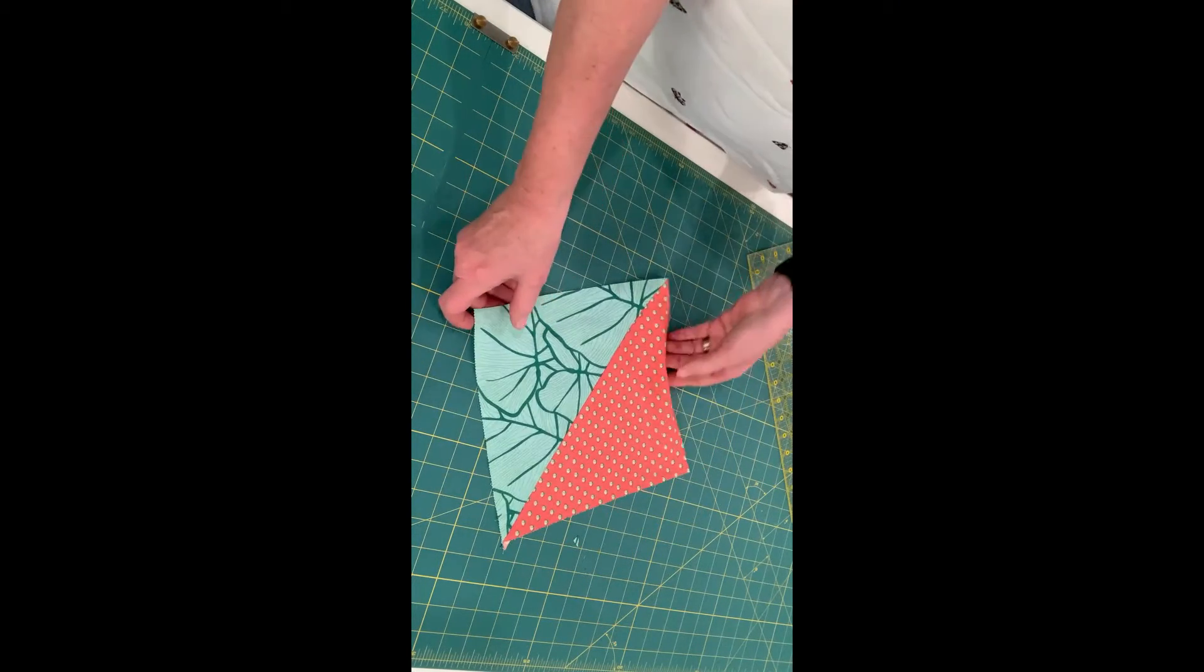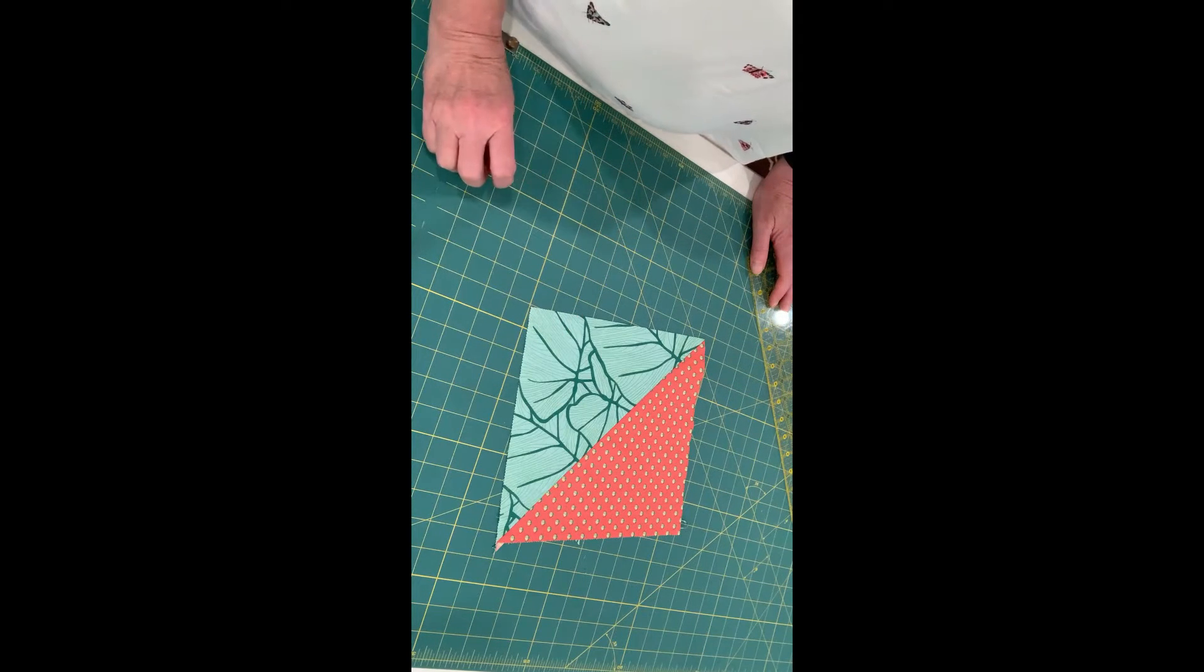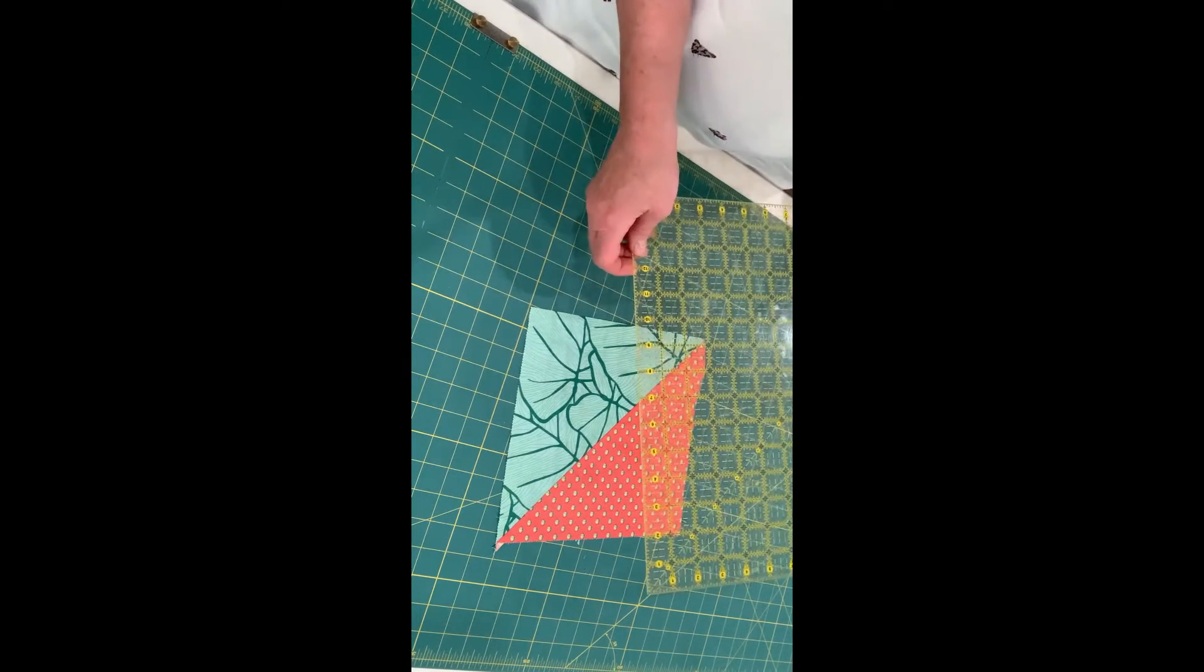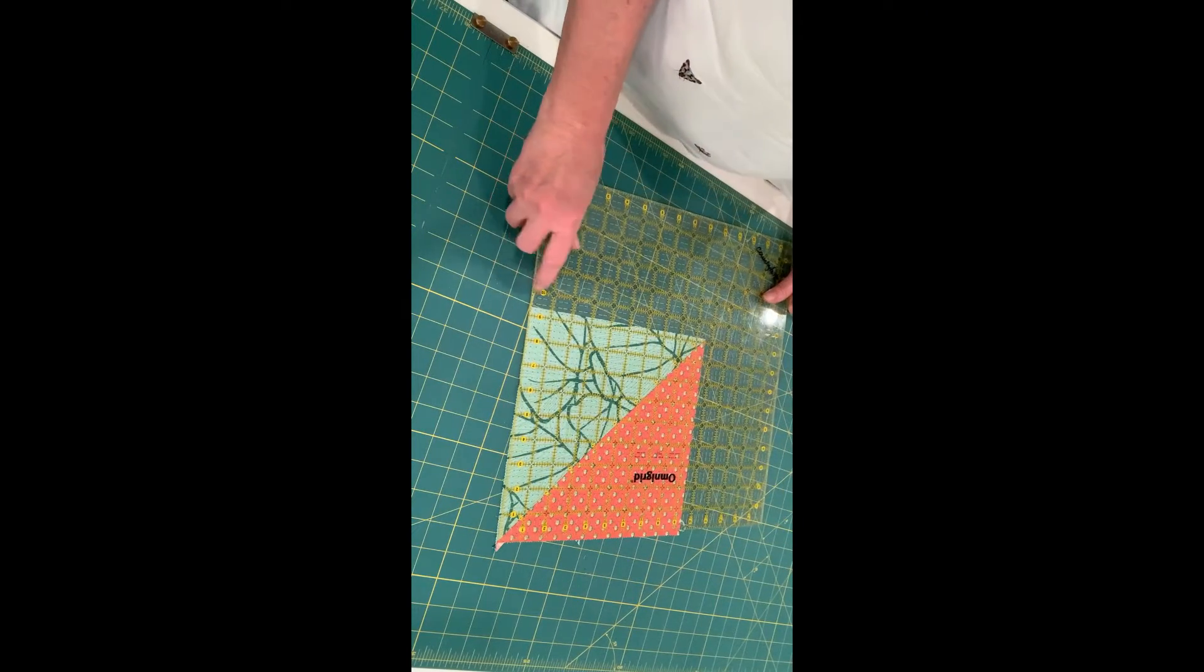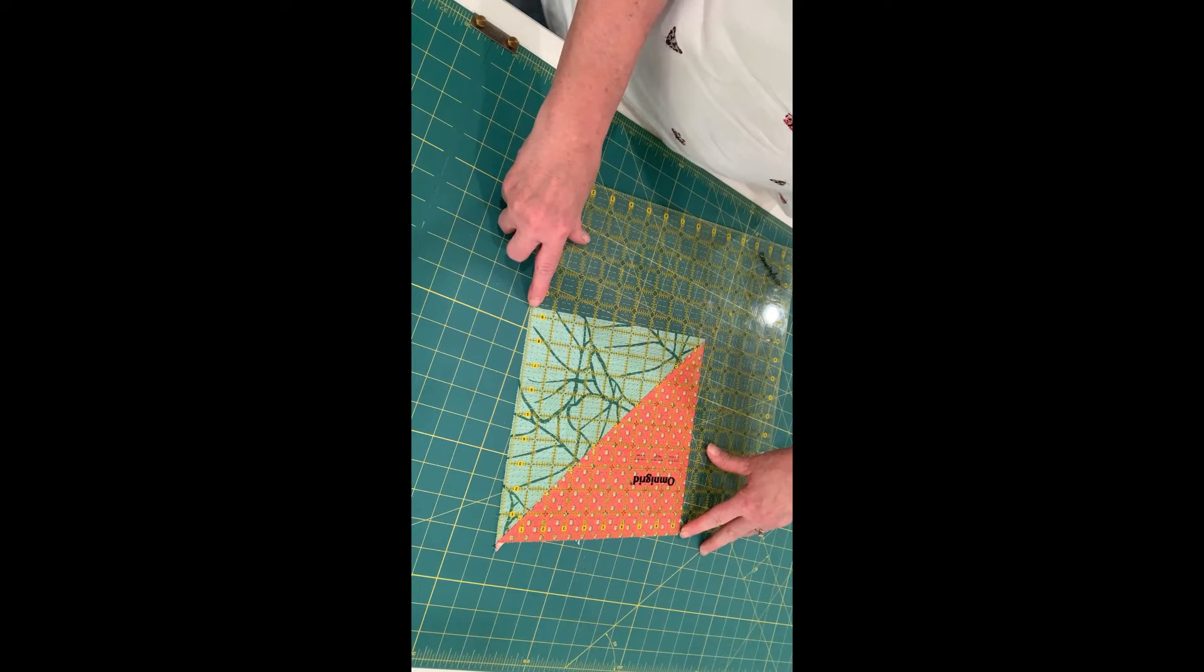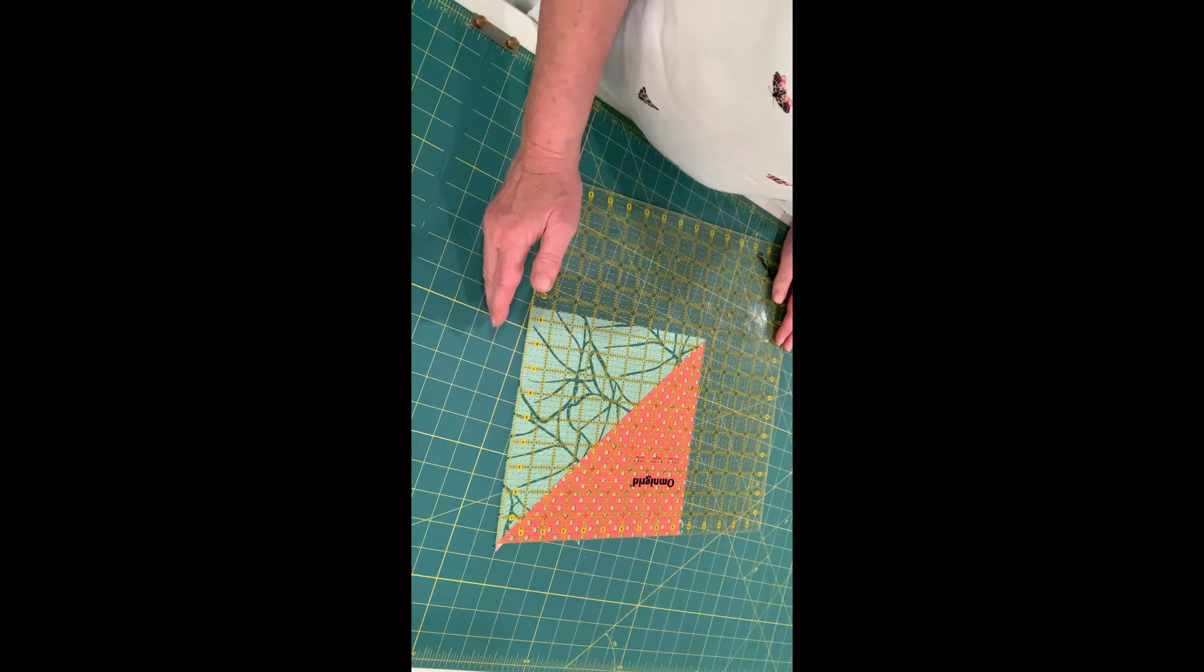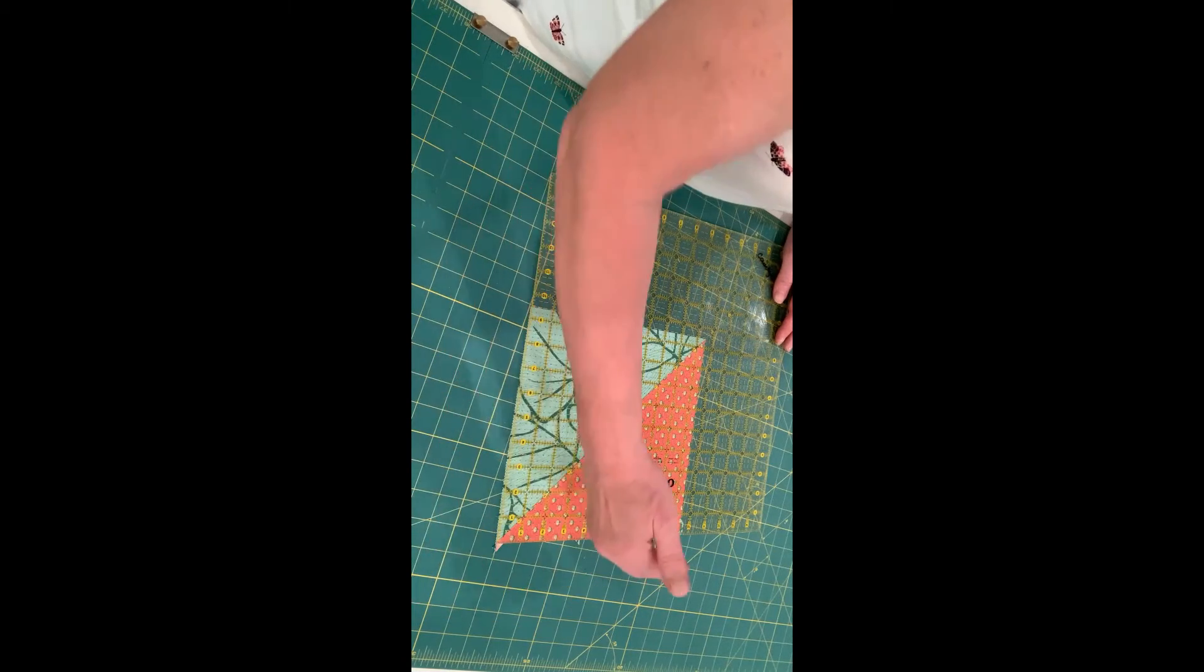So that is a really easy way to cut triangle squares. Using a square ruler, lining up the two sides with the unfinished size that you are trying to get and cutting off the two edges that hang over.